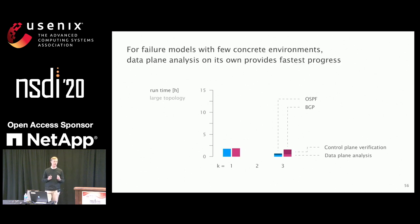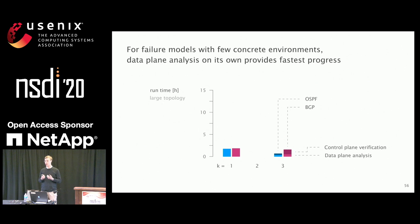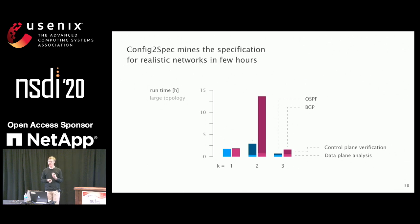We identified two special cases. For small failure models — those containing very few concrete environments — it's much better to just enumerate all environments using data plane analysis and not go to verification at all. For large failure models that allow many failures, trimming plays a huge role because so many policies just cannot hold given the connectivity in the topology. The worst case for us is up to two failures — a failure model with many concrete environments, yet not enough failures for trimming to make a big difference. For BGP, we use about 13.7 hours for a topology with 160 routers, and for OSPF about four hours.